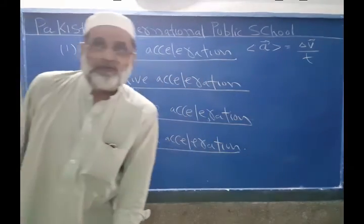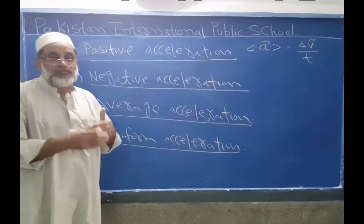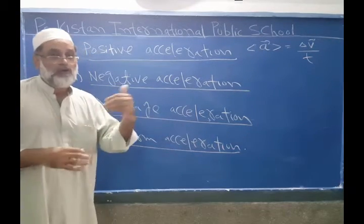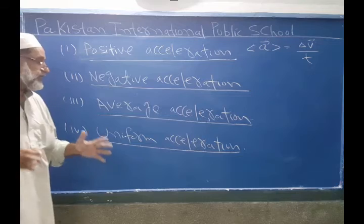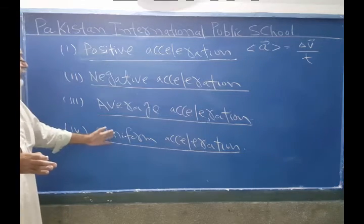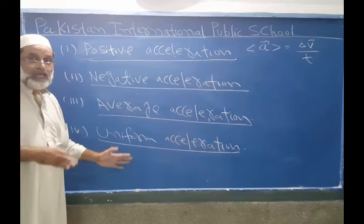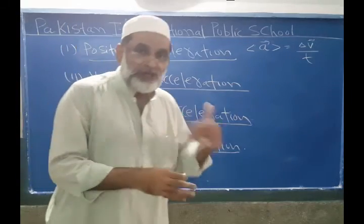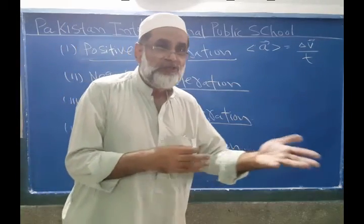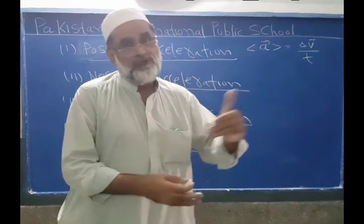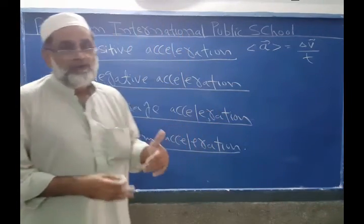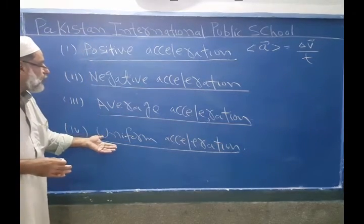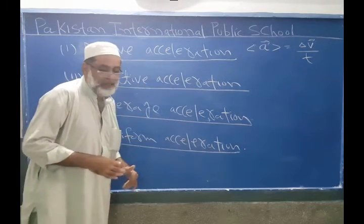Fourth type is uniform acceleration. If the velocity of the body is changing uniformly in equal intervals of time, then the acceleration produced by that body is known as uniform acceleration. If velocity is changing uniformly with a constant rate, that is also known as uniform acceleration.